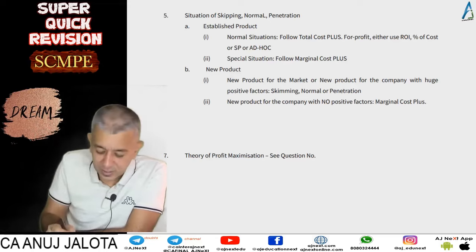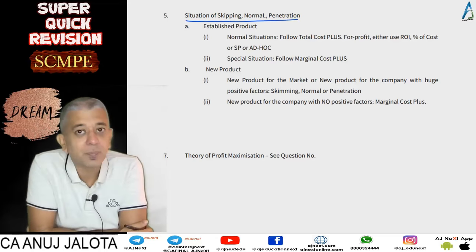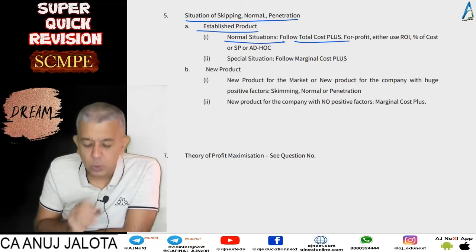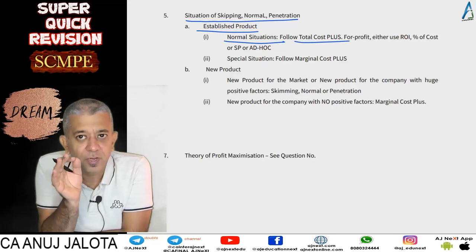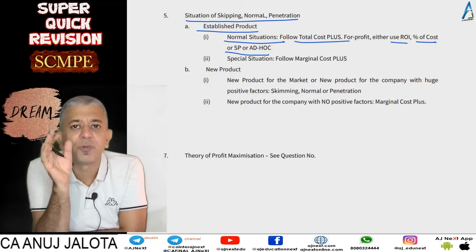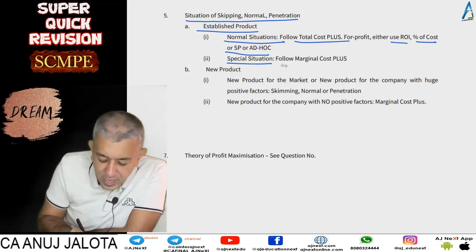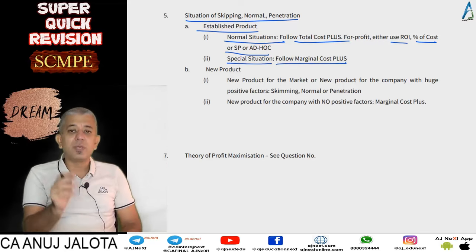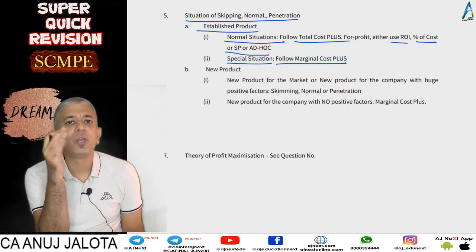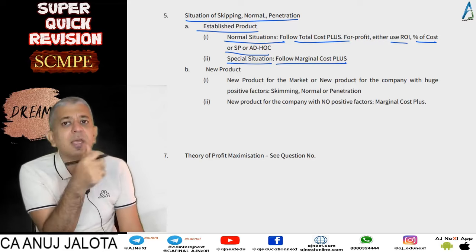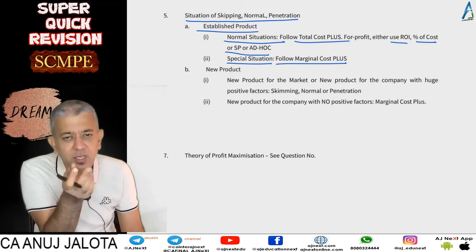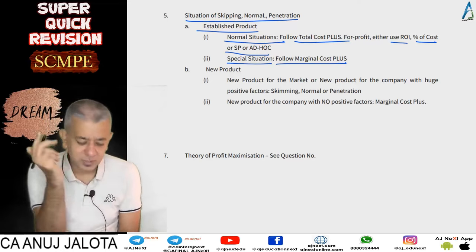Now let's recap the summary chart we built earlier. For an established product in a normal situation, follow total cost plus, where profit can be calculated as ROI, percentage of cost, percentage of selling price, or an ad hoc number. For a special situation with an established product where you must reduce prices — such as being out of market, sudden new competition, a huge order with idle capacity, a natural disaster, or when fixed costs have already been met — follow marginal cost plus.